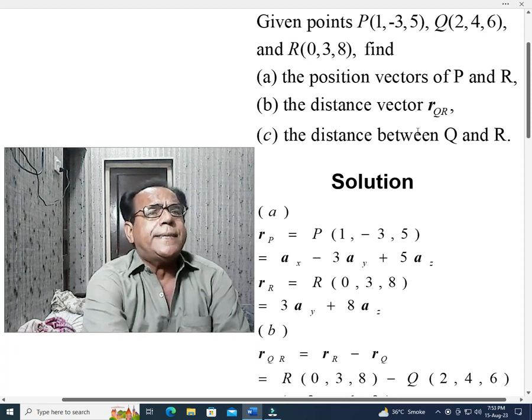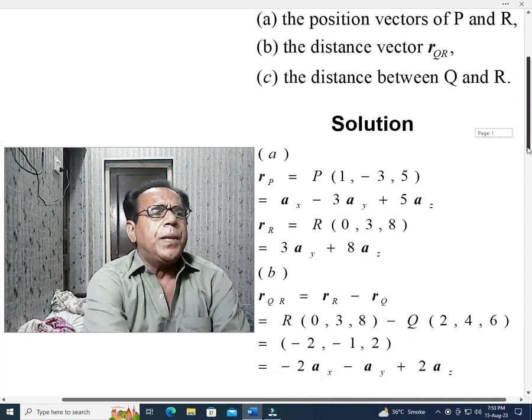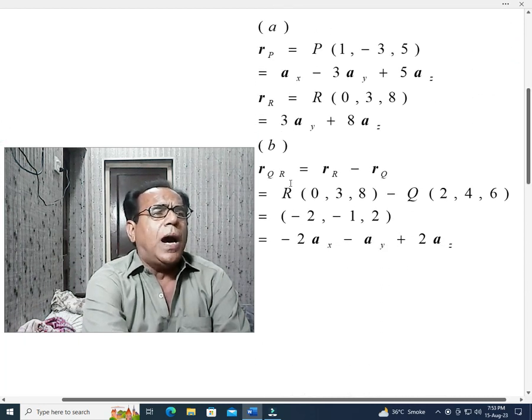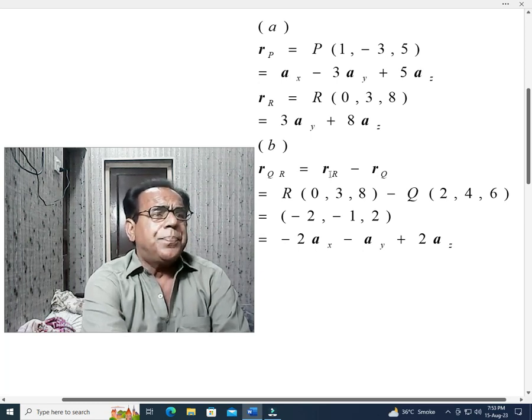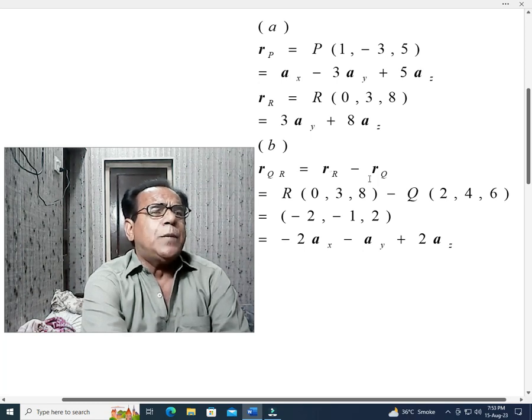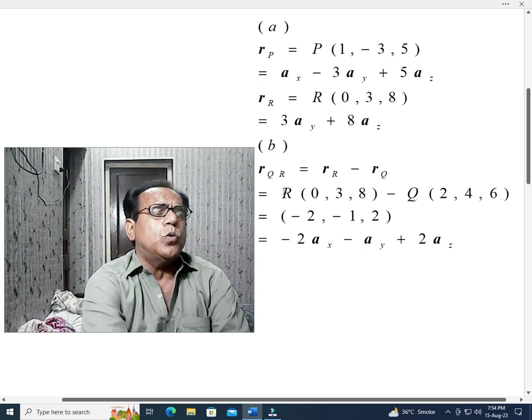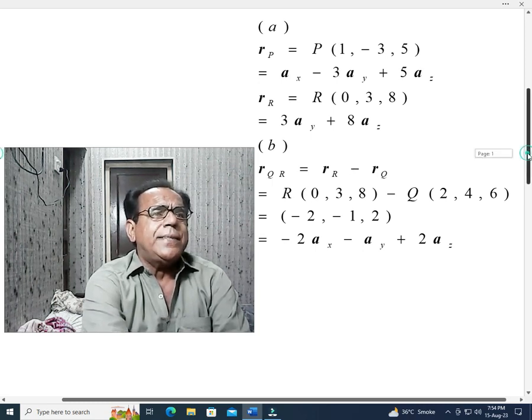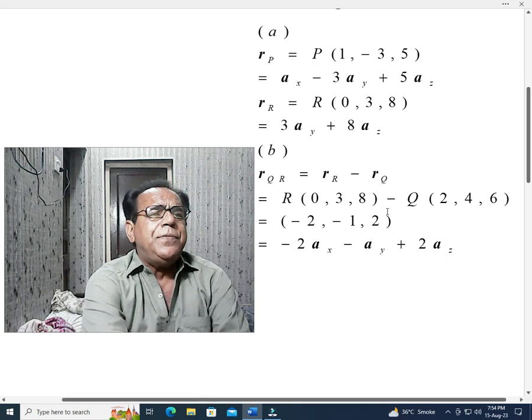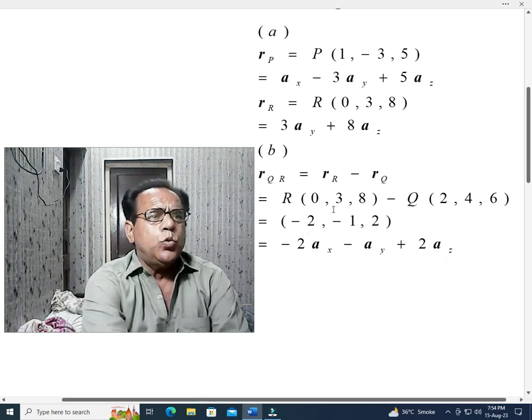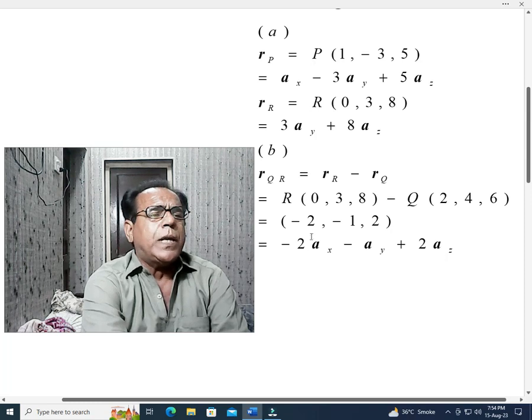Now we come to part B. The distance vector r_QR. Part B r_QR means r_R minus r_Q. So we have a position of R with respect to origin and position of Q with respect to origin. R is given as 0,3,8 and Q is given as 2,4,6. When we will subtract, it will become 0 minus 2 = -2, 3 minus 4 = -1 and 8 minus 6 = +2. It can be written in this form: -2a_x - a_y + 2a_z.